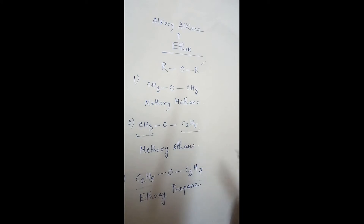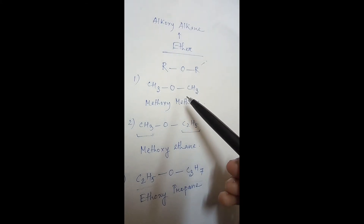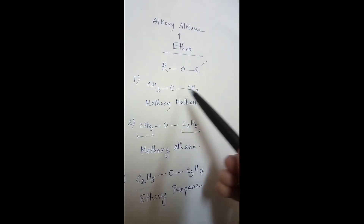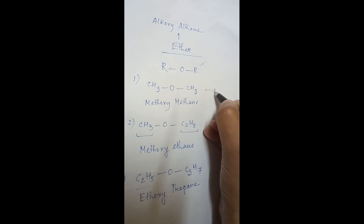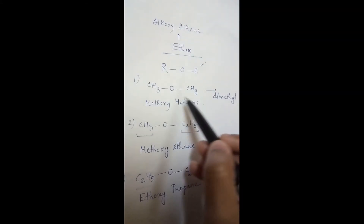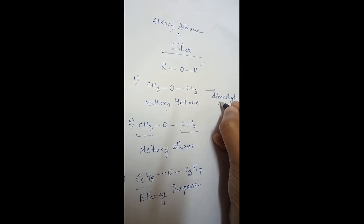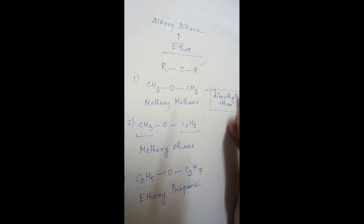These compounds also have common names. For the first compound, CH₃OCH₃, you can see two methyl groups are present. Because there are two groups, we use the prefix 'di', giving us dimethyl, and since the whole compound is an ether, the common name is dimethyl ether.